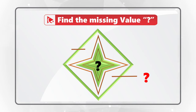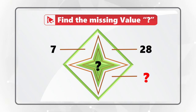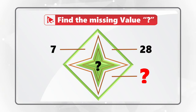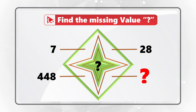Number 7 is at 11 o'clock, number 28 at 1 o'clock, then comes the missing number at 5 o'clock, and then there is a number 448 at 8 o'clock. In the center of the combined shape, there is also a missing number represented by the question mark.